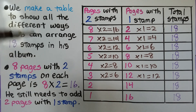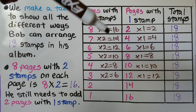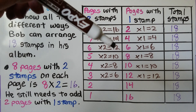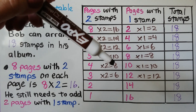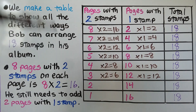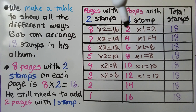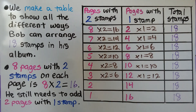Look at how many stamps are on the pages with two stamps: 16, 14, 12, 10 — they're each going down by two. And the stamps on pages with one stamp are each going up by two, just like the number of pages.